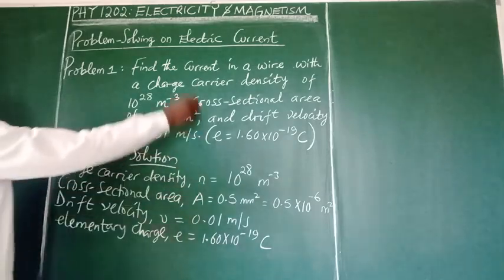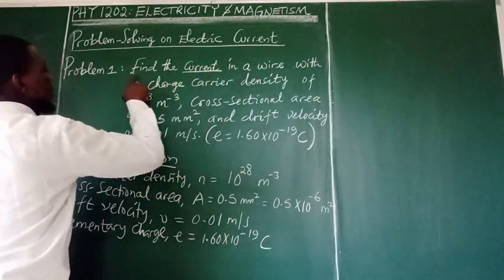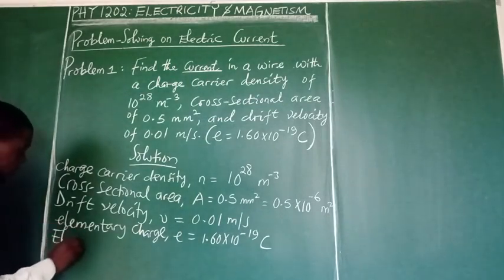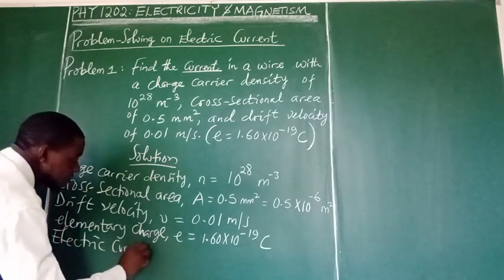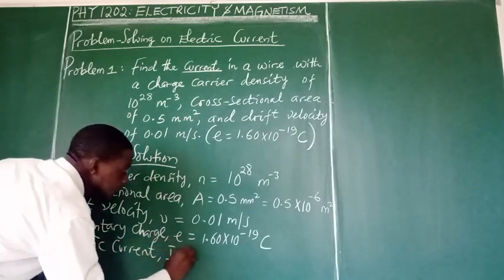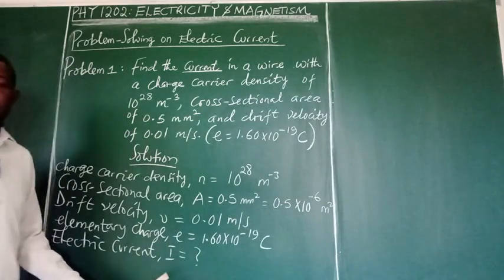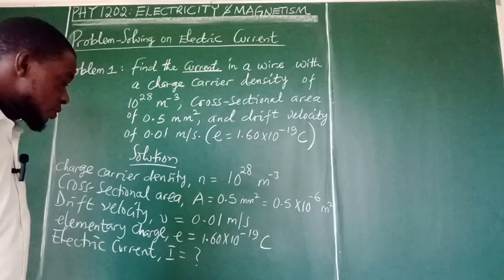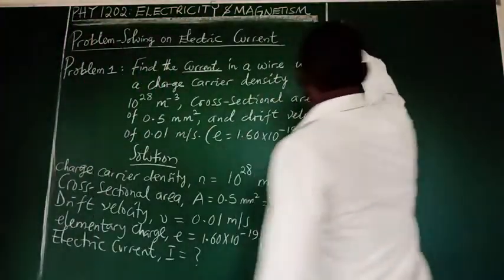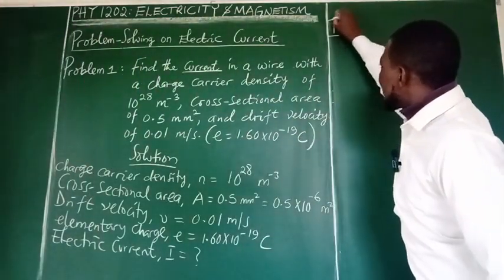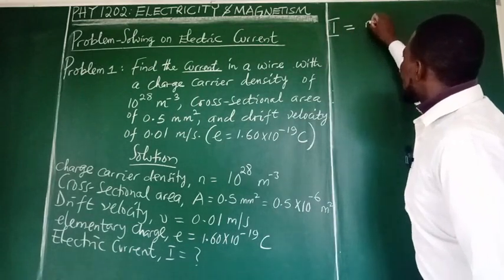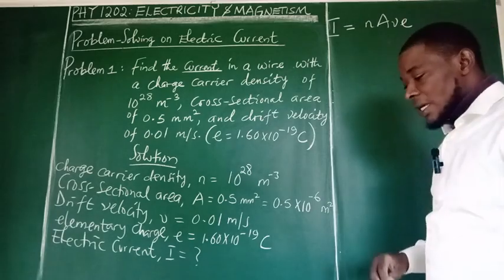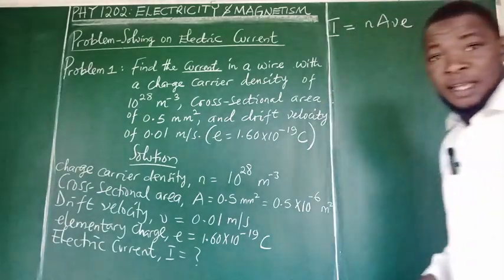The target variable is current because they say we should find current. So electric current I is unknown. It's our target variable. Now, what formula we use to calculate this current? We use I equals NAVE.